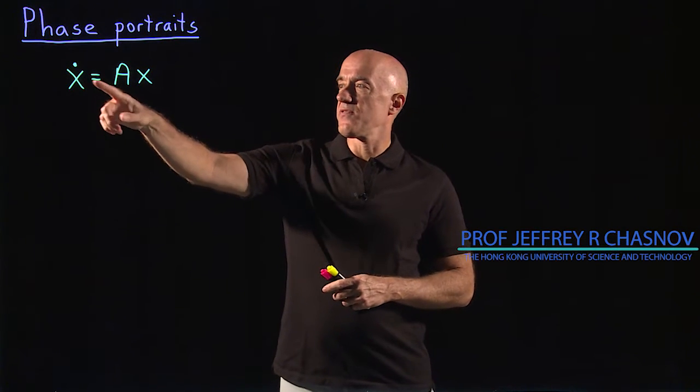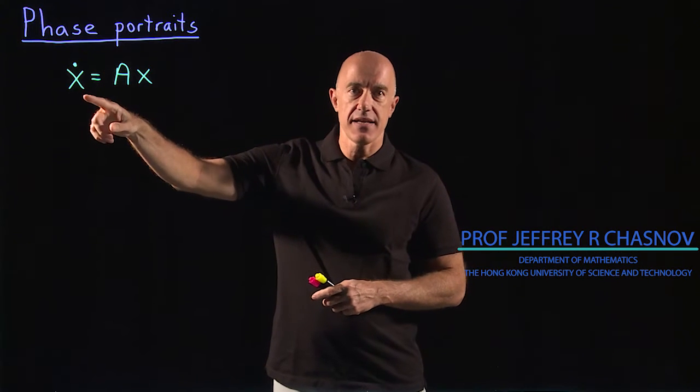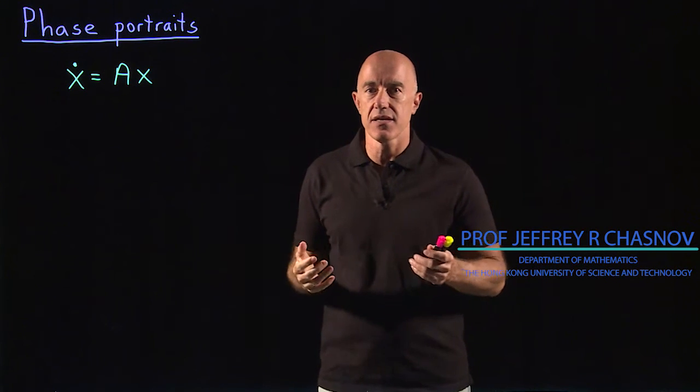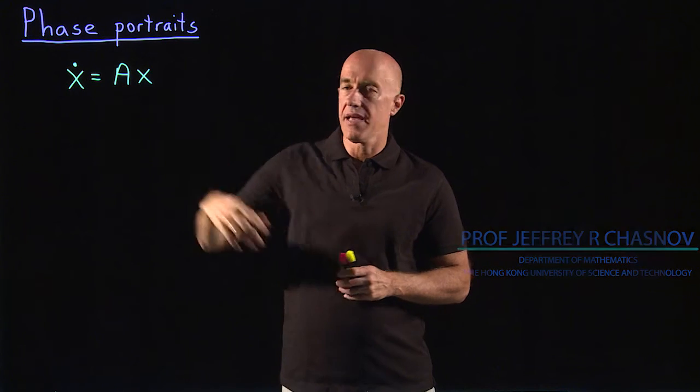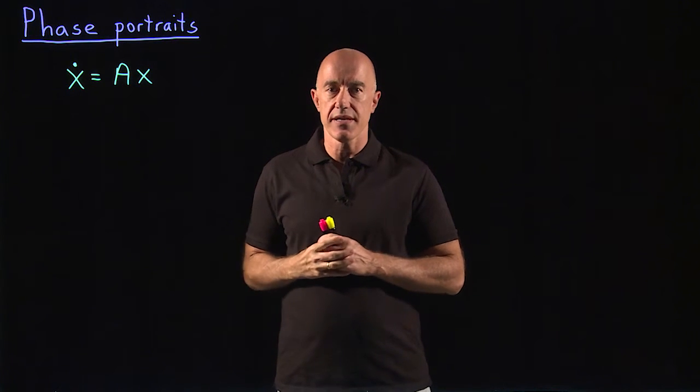So we've been solving this differential equation, x dot equals A x. A is a two by two matrix, x is a column vector, x1 and x2.